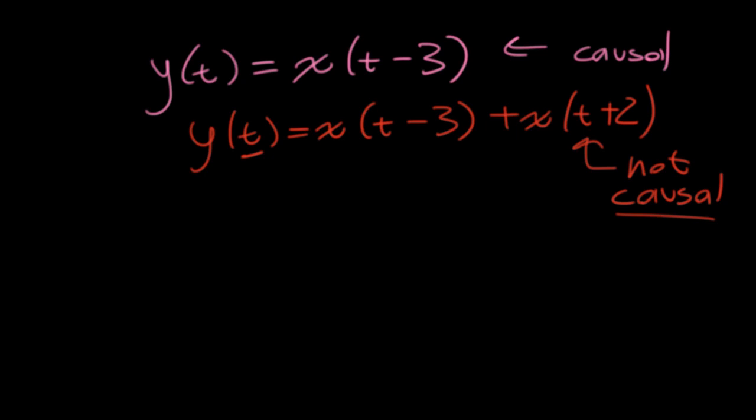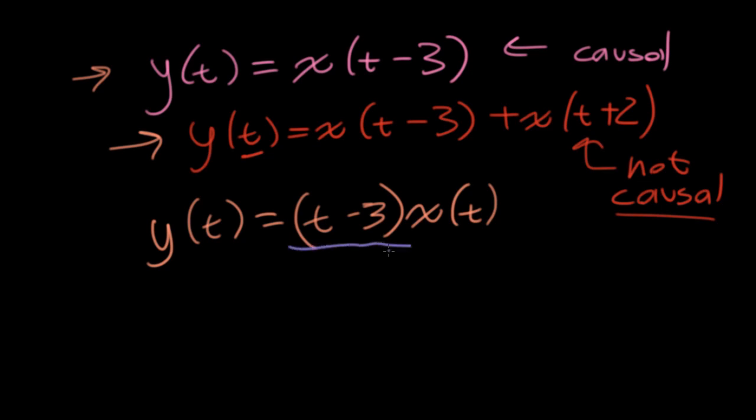Something that students will often get confused by is what happens if I have time elements outside of the x. Suppose I have x(t), this by itself would be perfectly causal. It doesn't look in the future, it only looks at the present. It doesn't have to look at the present - these two signals don't look at the present. If I were to multiply this by (t-3), what does this do to causality? Absolutely nothing.